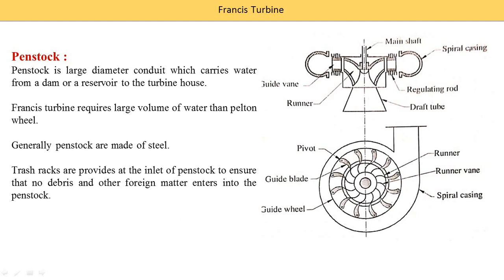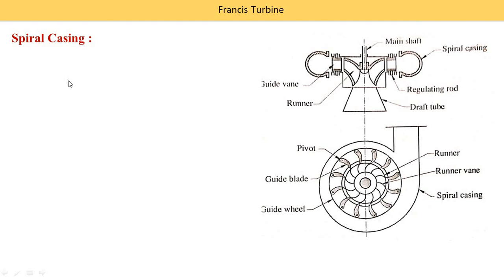Next component is the spiral casing. Its name suggests the casing has the shape of a spiral. Casing means the outer part of any component. Spiral means the casing has maximum area at the inlet, and as we move further, the area or volume continuously reduces — that is known as spiral casing.